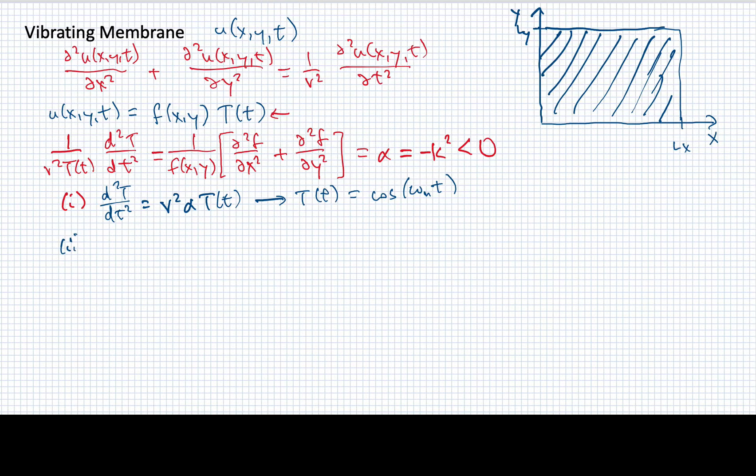Now what about the other part? I've got essentially a linear partial differential equation that looks like this for this function f, and it's going to be equal to alpha, our constant, same constant here, times f of x and y. But now I've got another thing that I can use separation of variables. So I'm going to write f of x and y as a product of a part that depends only on x and a part that depends only on y.